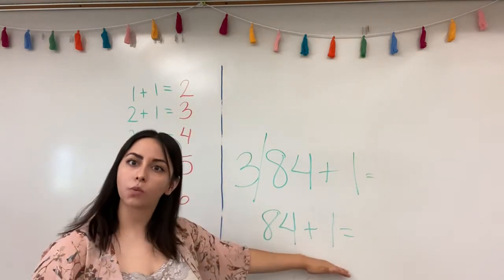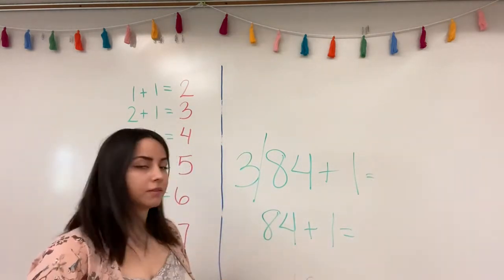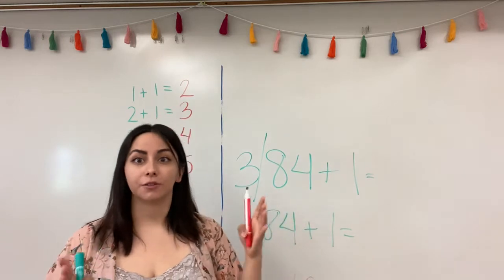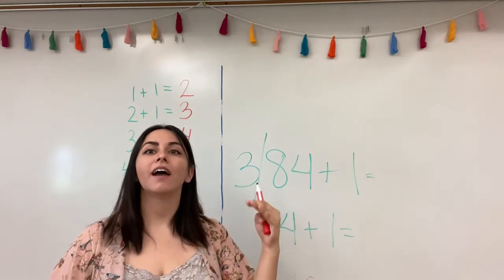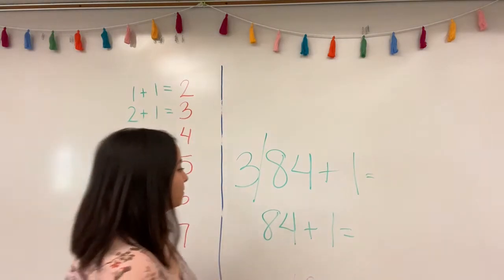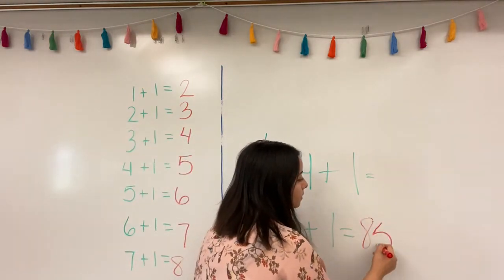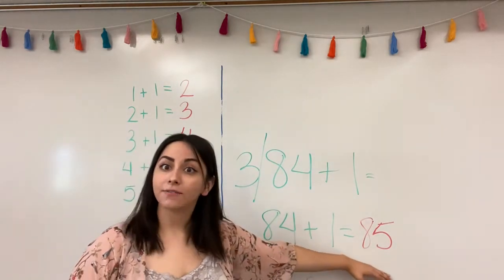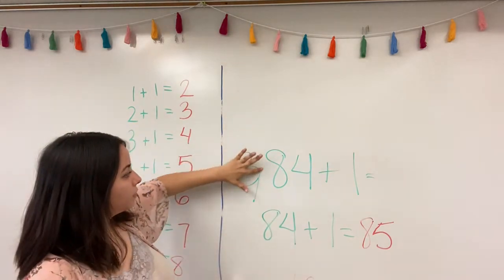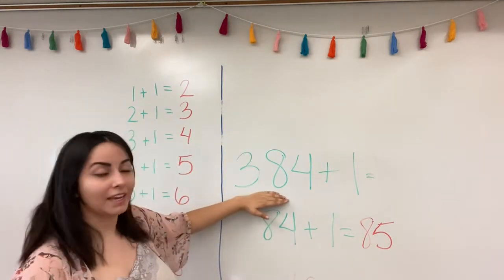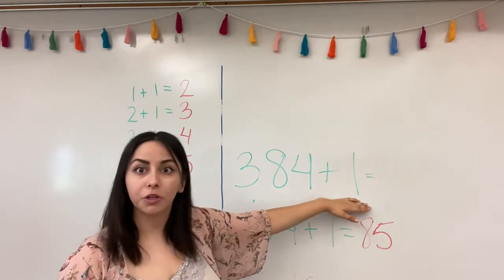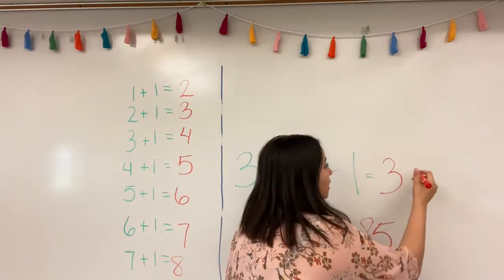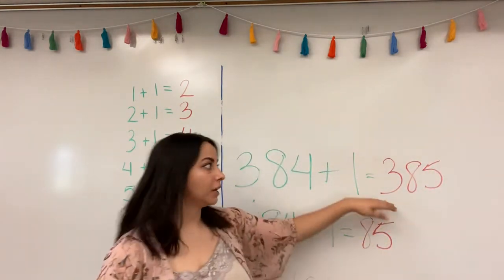So what's eighty-four plus one? Eighty-four. Let's count. Eighty, eighty-one, eighty-two, eighty-three, eighty-four, eighty-five. Good job. So eighty-four plus one is eighty-five. So three hundred and eighty-four plus one would be three hundred and eighty-five.